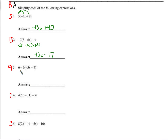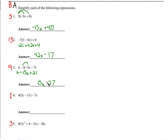A common mistake is to do six minus three first, but a lot of you sidestepped that and realized we're distributing this negative three. Just remember it's a negative three, so when you distribute a negative three to a negative five, we have a positive 15x. And negative three times negative seven is a positive 21, so 21 plus six is 27, and we have 15x plus 27.